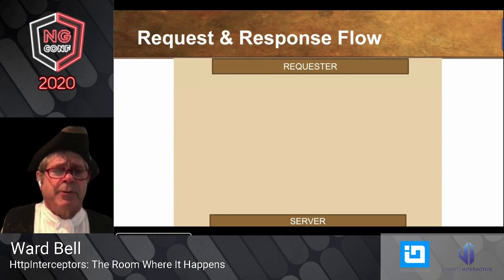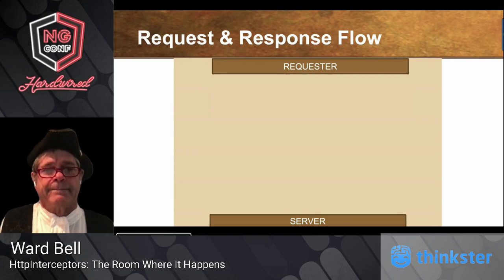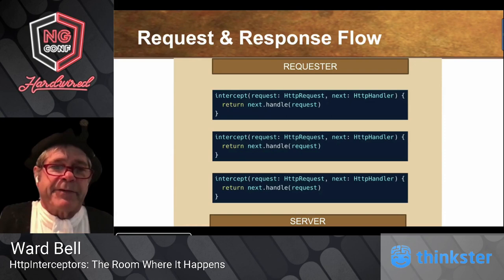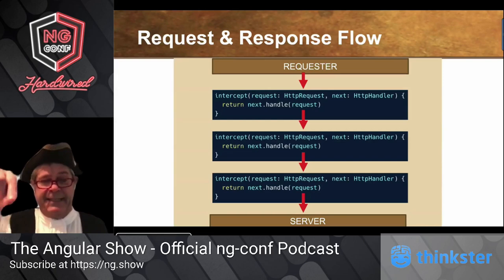Now that we've got two interceptors, that raises an interesting question: what's actually going on with all of them? We have a requester at the top and a server at the bottom, and in this diagram we've got three interceptors. The request comes in, you do whatever you do to it, pass it to handle, it goes on to the next interceptor, then the next, and eventually it ends up at the server.